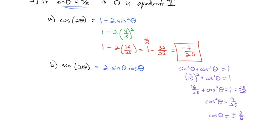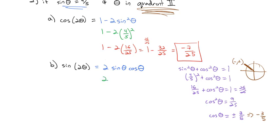To decide if it's plus or minus, we use the quadrant information. We're in quadrant 2, which is the top left, where x is negative and y is positive. Cosine is the x-coordinate, so cosine is negative — we use negative 3/5. Now substituting into sin(2θ): 2 times 4/5 times negative 3/5. Multiplying across the top: 2 times 4 times negative 3 is negative 24, and 5 times 5 is 25. So sine of 2θ is negative 24/25.